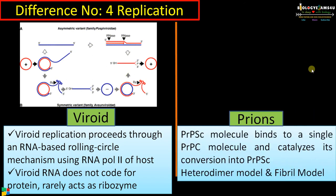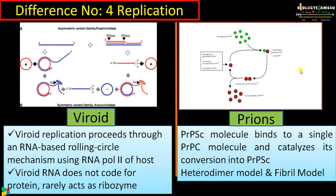In the case of prions, what happens is that PrPC is converted to PrPSC. The normal protein PrPC interacts with the abnormal disease-causing protein PrPSC, causing continuous conversion of PrPC to PrPSC. This results in aggregation of many PrPSC proteins that ultimately kill neurons. There are two models proposed for this replication: the heterodimer model and the fibrillar model. Both suggest that conversion of PrPC to PrPSC occurs during the replication process.